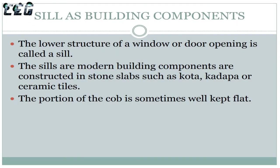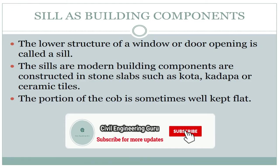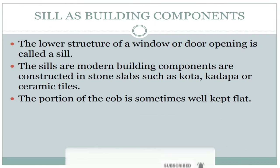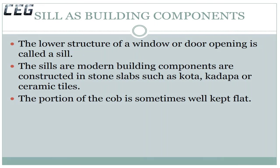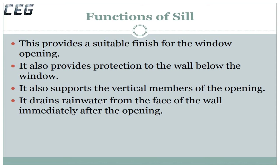Sill as building components: The lower structure of a window or door opening is called a sill. Sills are constructed in stone slabs such as Kota, Kadapa, or ceramic tiles. Functions of sill: It provides a suitable finish for the window opening, protection to the wall below the window, supports the vertical members of the opening, and drains rainwater from the face of the wall immediately after the opening.